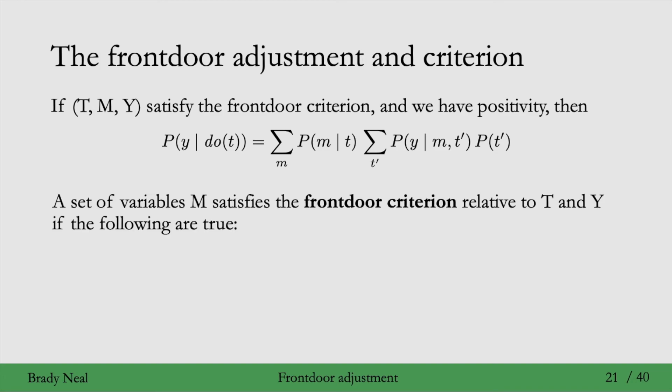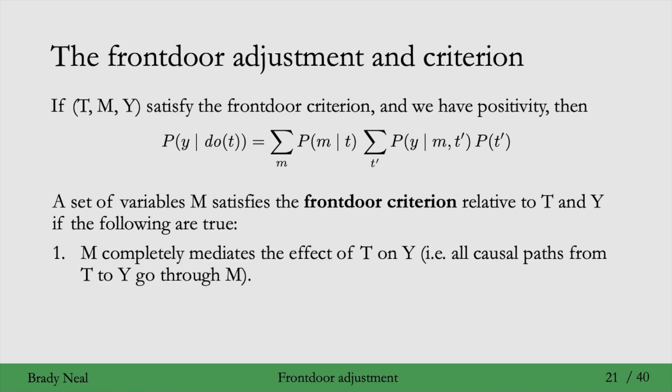A set of variables M satisfies the front door criterion relative to T and Y if the following are true. 1. M completely mediates the effect of T on Y. So, in other words, all causal paths from T to Y go through M. M is a full mediator of the effect of T on Y.